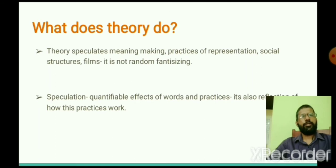So what does exactly literary theory do? Theory speculates meaning making, practices of representation, social structures, films. It is not random fantasizing. Any analysis of a text, any interpretation of a text, is to be based on rational thinking. You cannot make general sweeping statements. For example, if you take the poem The Justice of the Peace, you can look at the poem from a number of ways.